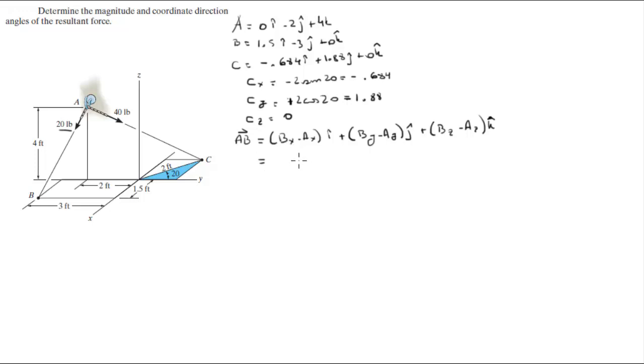Now you just need to plug the numbers in and you get that this is equal to 1.5i minus 1j minus 4k.